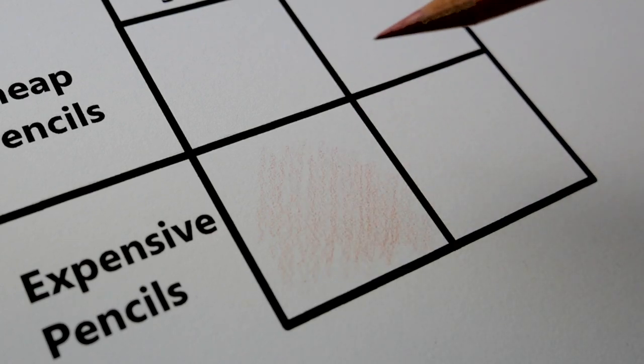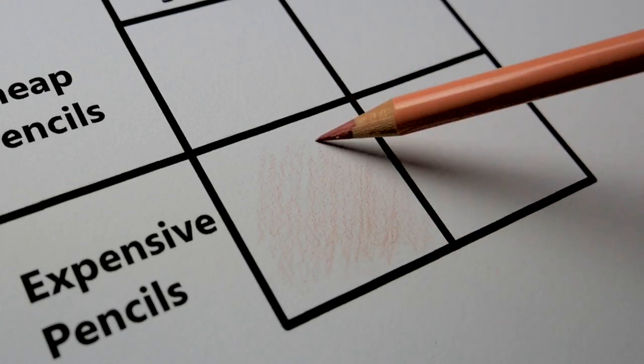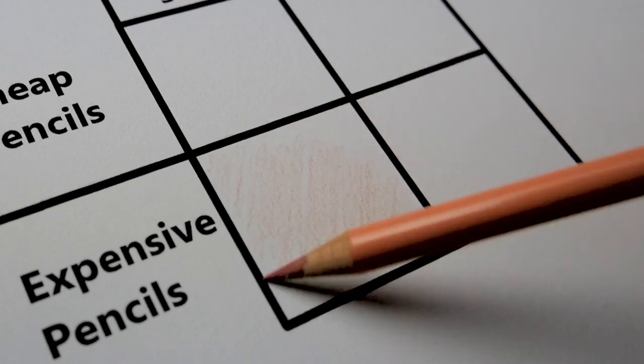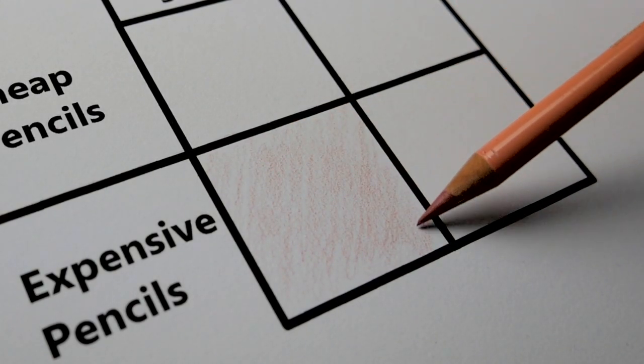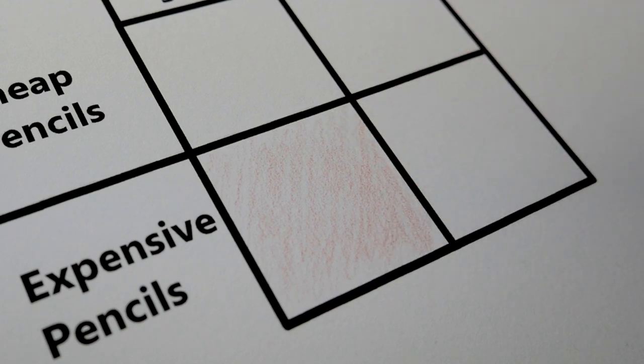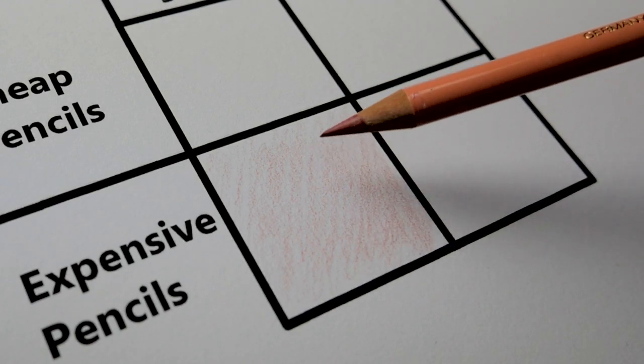So essentially what you do is you go in, keep your pencil sharp, and you fill in the area. Because this is one of the biggest issues with drawing, is getting a smooth layer. You can see how all the white of the paper is showing through. That's not good.